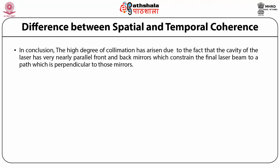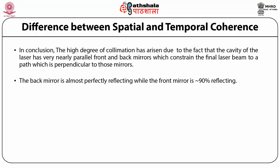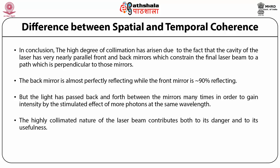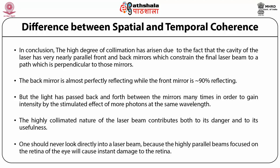In conclusion, the high degree of collimation arises due to the fact that the cavity of the laser has very nearly parallel front and back mirrors, which constrain the final laser beam to a path perpendicular to those mirrors. The back mirror is almost perfectly reflecting while the front mirror is around 90% reflecting, but the light passes back and forth between the mirrors many times in order to gain intensity by the stimulated effect of more photons at the same wavelength. One should never look directly into a laser beam because the highly parallel beam focused on the retina of the eye will cause instant damage.